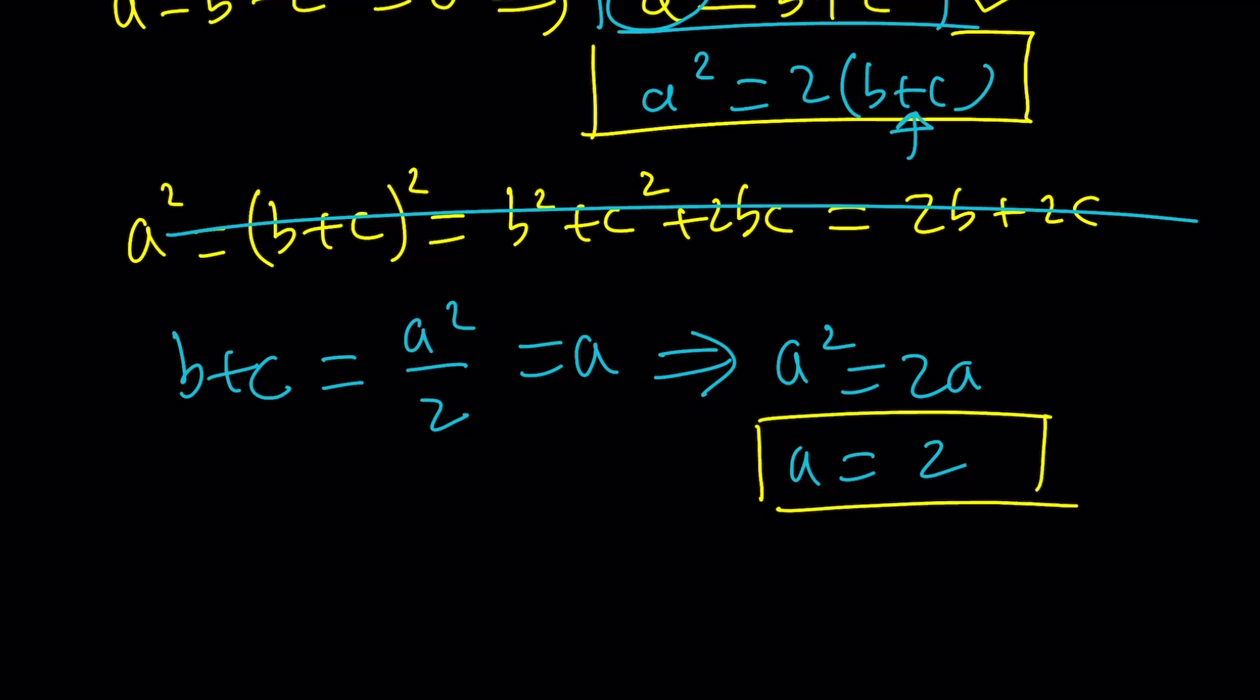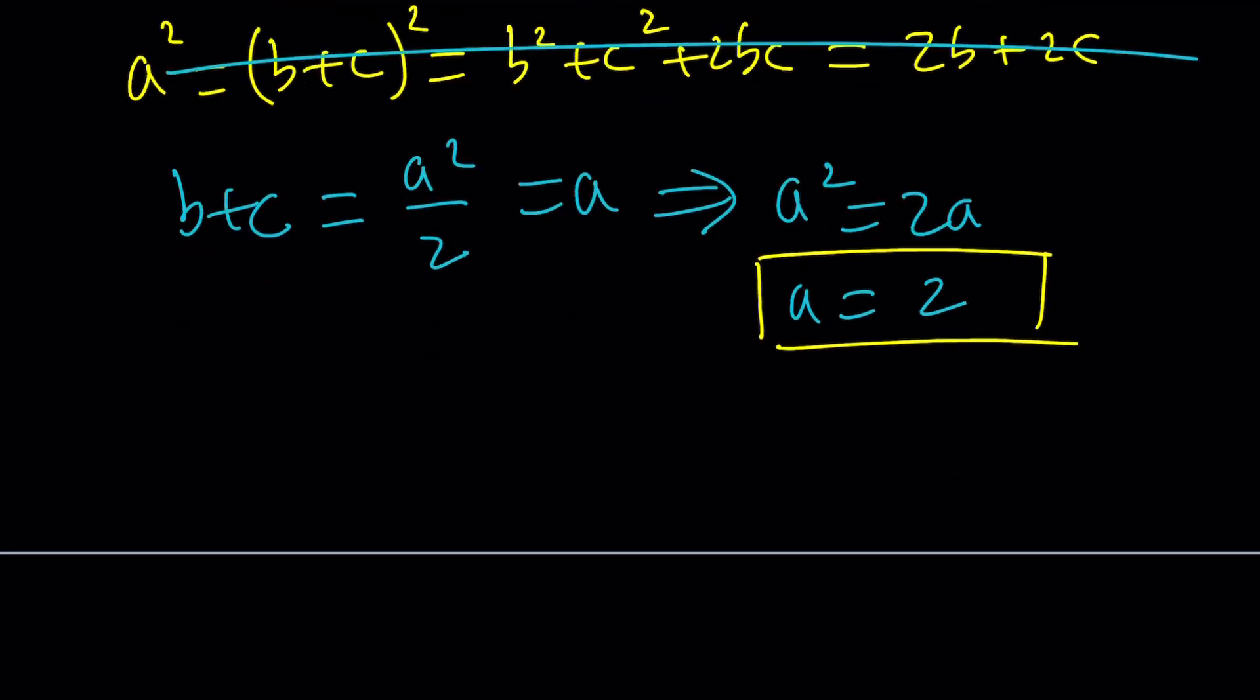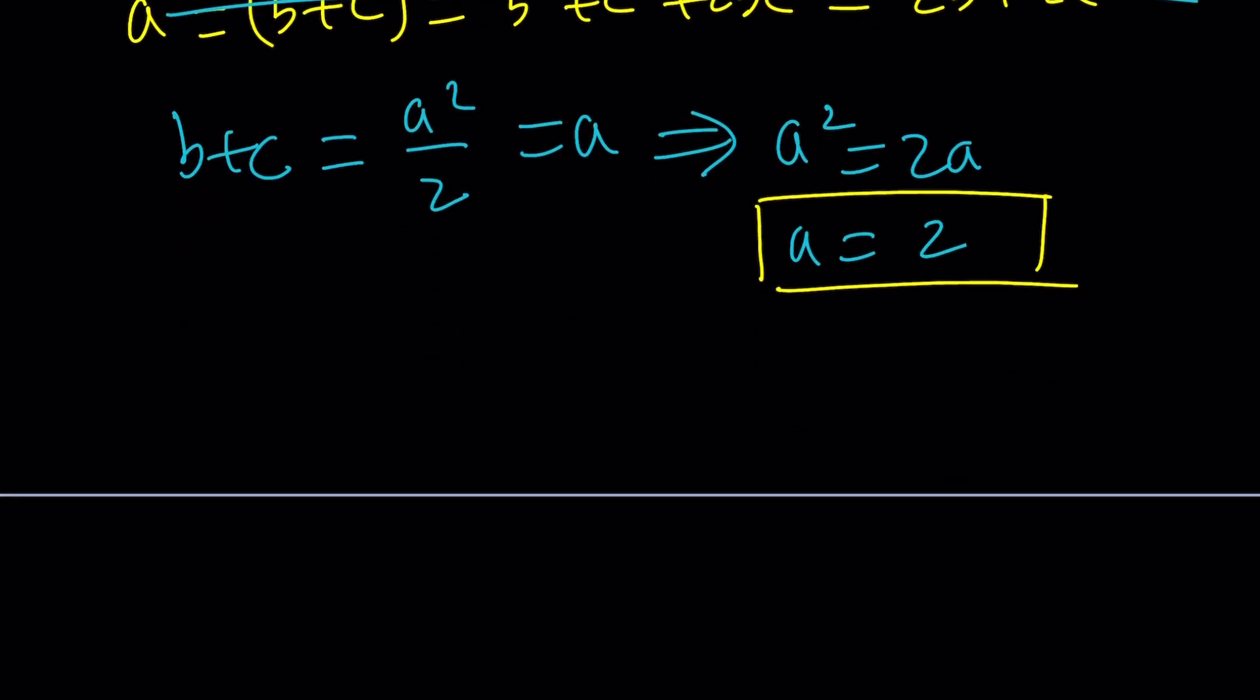The rest would be fairly easy. If a is equal to 2, then you can go ahead and plug it into the second, I mean the first equation, because if you plug it into the second, you're going to get a cubic expression, and you're going to have to deal with that. I don't think it's going to be too hard, but you will have to use other things, such as b plus c is equal to 2. Let's just do it this way. Using the first equation is easier.